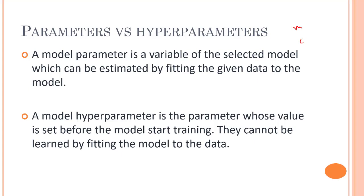Model hyperparameters are parameters whose value is set before the model training actually starts. They cannot be learned by fitting the model to the data. The difference between both: parameters are required for making predictions, whereas hyperparameters are required for estimating the model parameters. Examples of hyperparameters include the learning rate in gradient descent and the number of iterations in gradient descent.